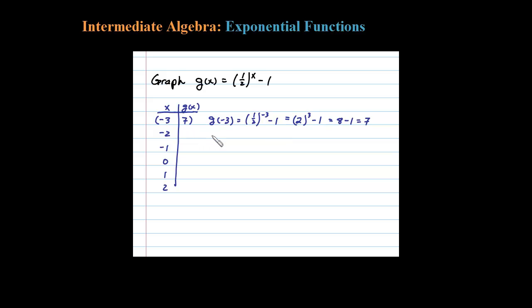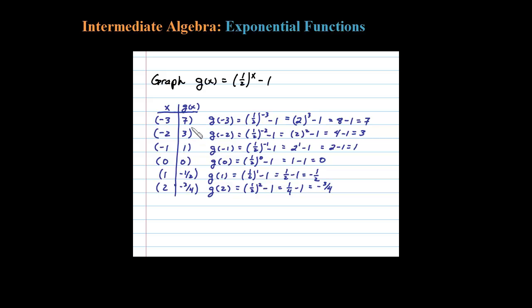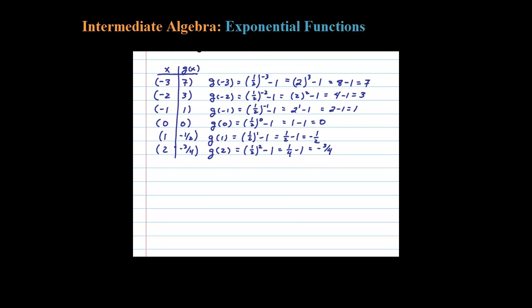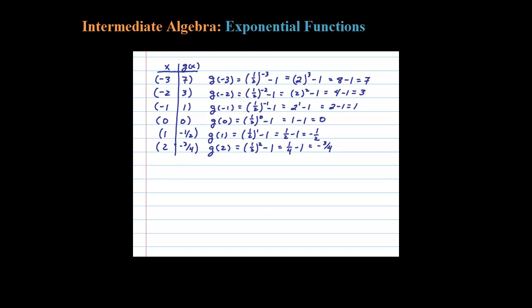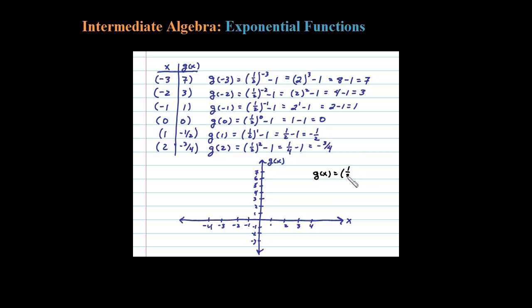Now let's evaluate for all the other points as well. Here I've plugged in all the numbers and found the corresponding Y values. Now we're ready to graph this on a Cartesian coordinate system. Let me draw that in. Now let's remember what we're trying to graph — G of X, which was one-half to the X power minus 1. This is an exponential, so let's go ahead and plot the points.